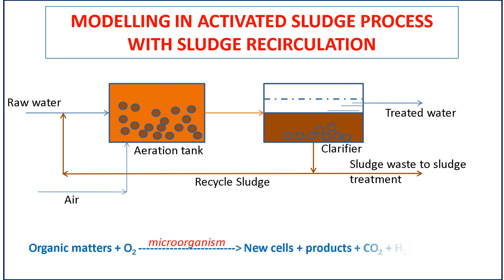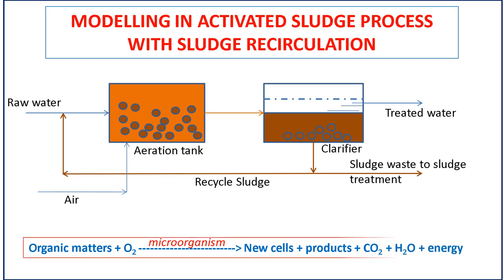The activated sludge process for wastewater treatment utilizes the services of aerobic microorganisms to degrade organic compounds present in wastewater. In general, the activated sludge process for wastewater treatment consists of two main equipment: namely an aeration tank and a sedimentation tank.